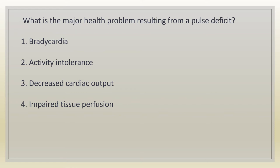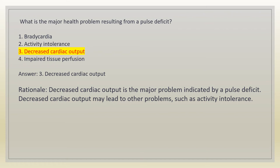What is the major health problem resulting from a pulse deficit? 1. Tachycardia. 2. Activity intolerance. 3. Decreased cardiac output. 4. Impaired tissue perfusion. Answer: 3. Decreased cardiac output. Rationale: decreased cardiac output is the major problem indicated by a pulse deficit. Decreased cardiac output may lead to other problems, such as activity intolerance.